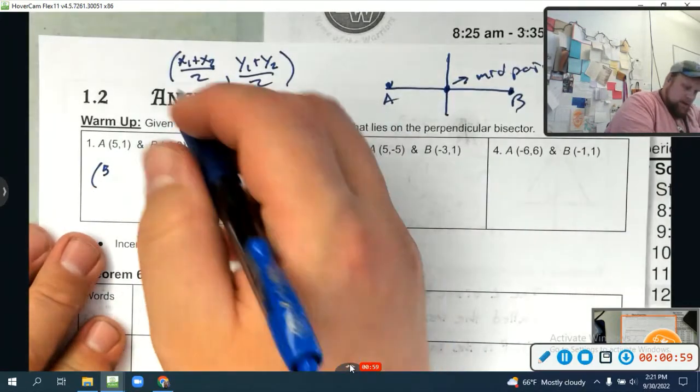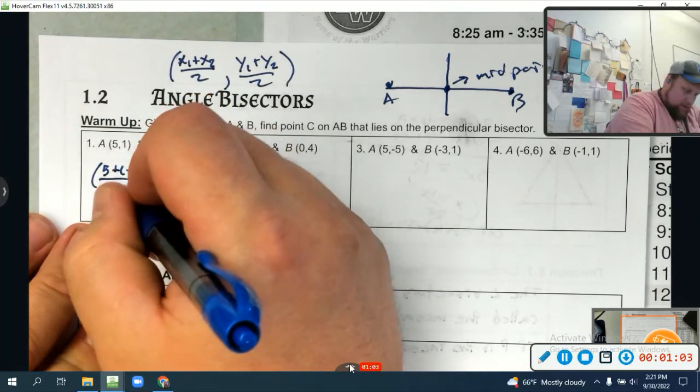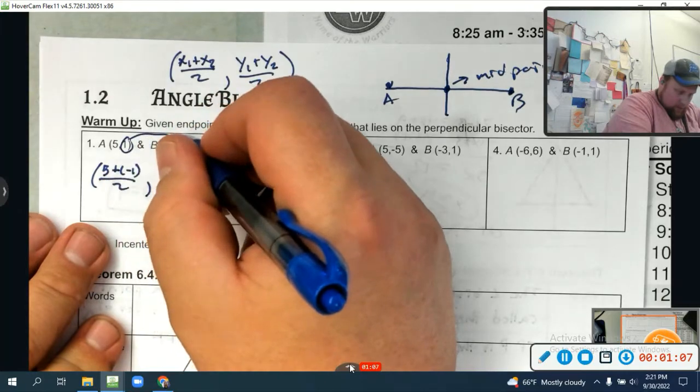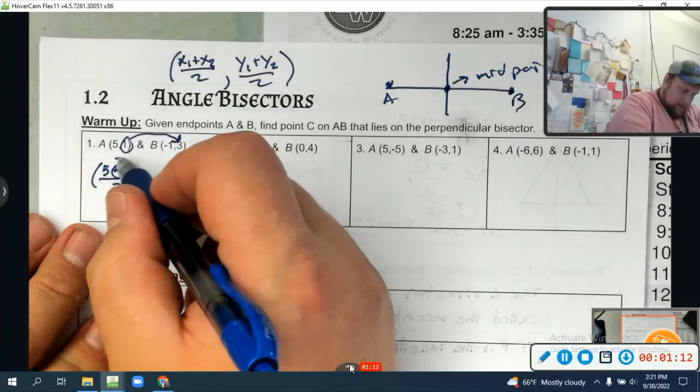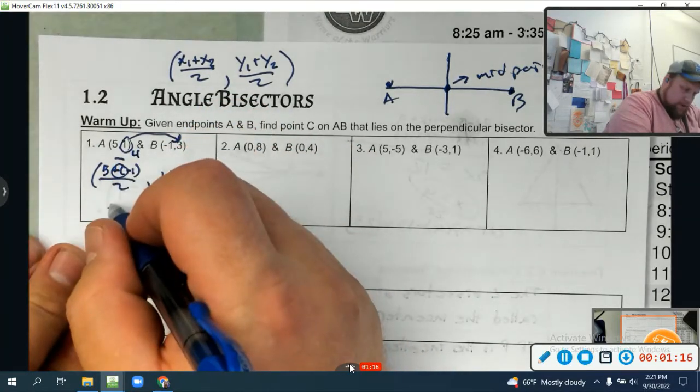So let's try that. I'm going to have 5 plus negative 1 divided by 2 for x, and 1 plus 3 divided by 2 for y. Now plus minus is minus. 5 minus 1 is 4, 4 divided by 2 is 2.